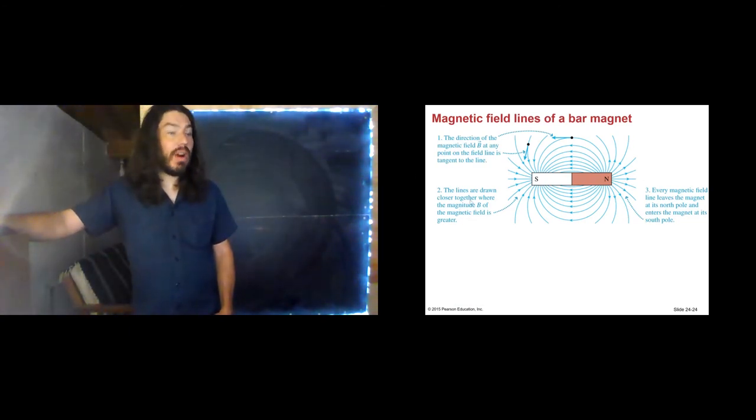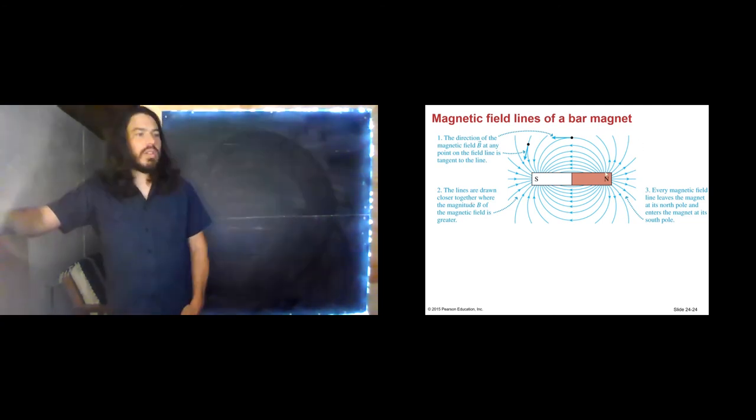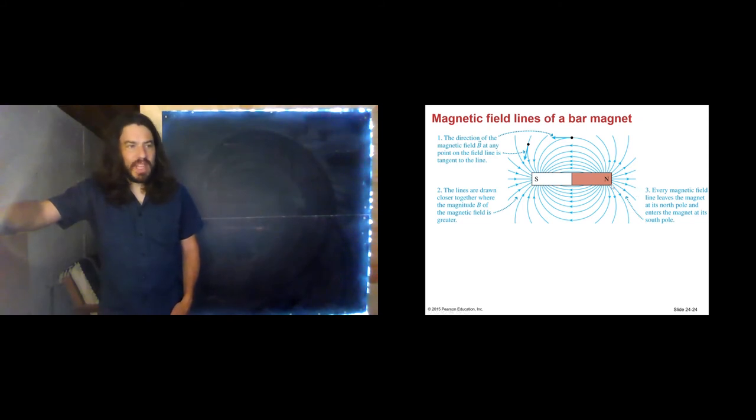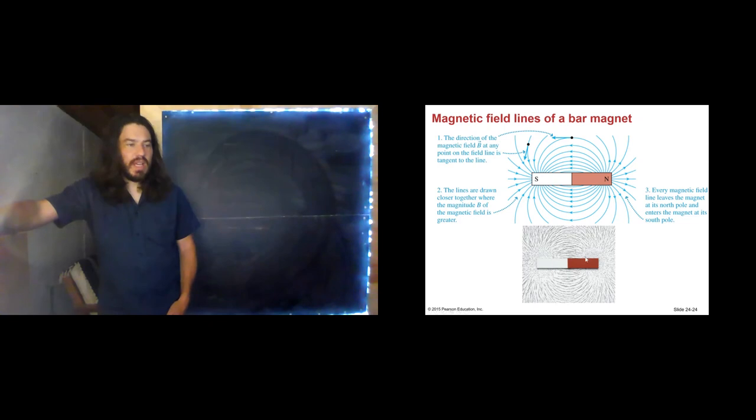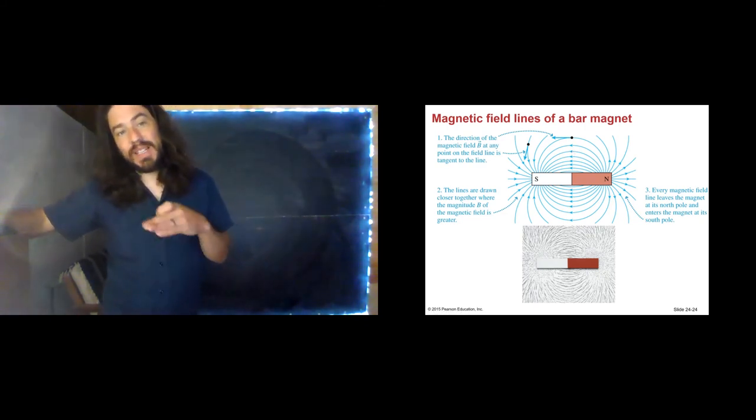So, the magnetic field lines of a bar magnet, I promised you that they would look very similar to the dipole, to an electric dipole, and indeed they do. Again, this is the magnetic field line. At any one point, the field, the magnetic field, is tangent to the field lines at that point. Much like with electric fields, where the field lines are closer together, we have a stronger field. And where the field lines are farther apart, we have a weak field. Every field leaves the north pole and enters the south pole. Here is a picture of an actual magnet in some iron filings. And we do see this general shape. It's quite nice. Again, though, at any point, the magnetic field can only have one direction and one magnitude. So, the magnetic field vector is always tangent to the magnetic field line.